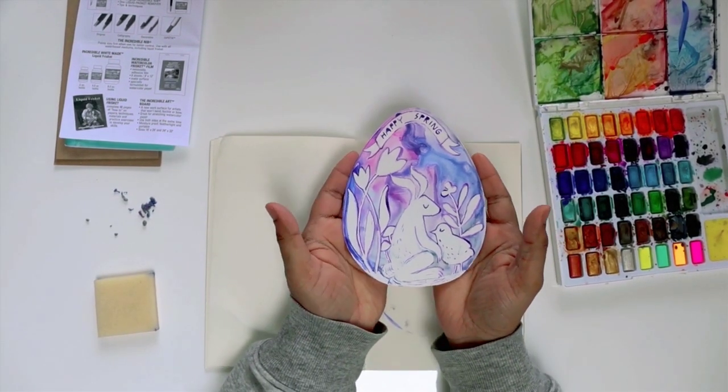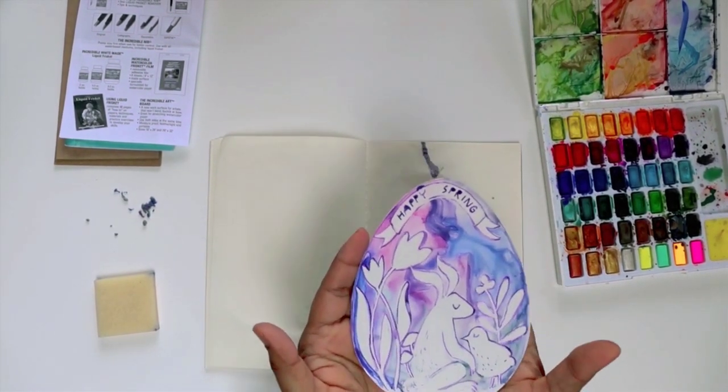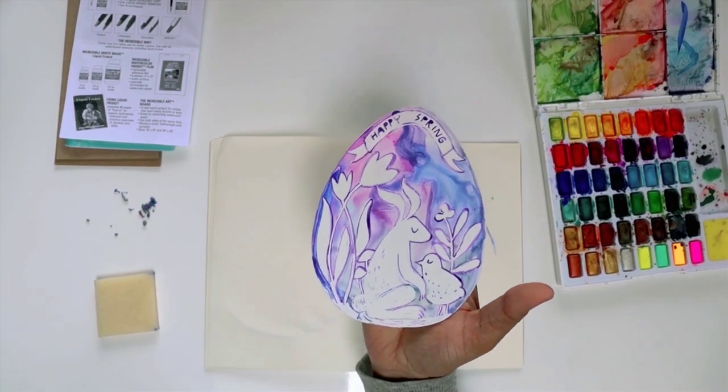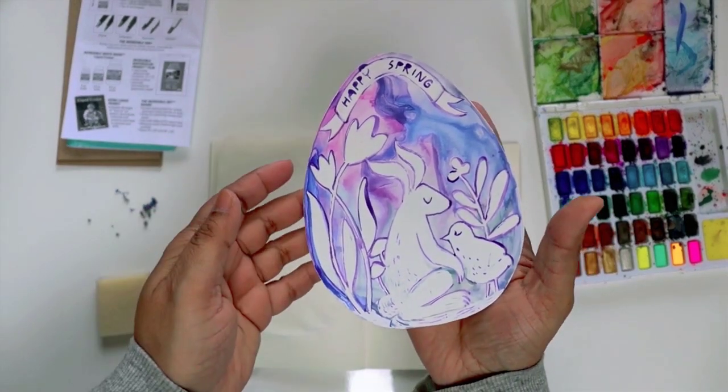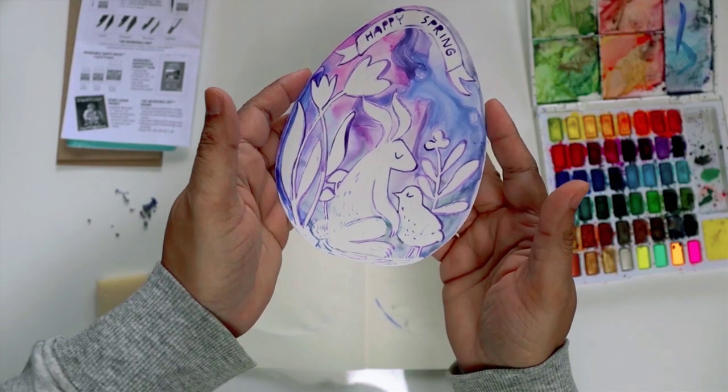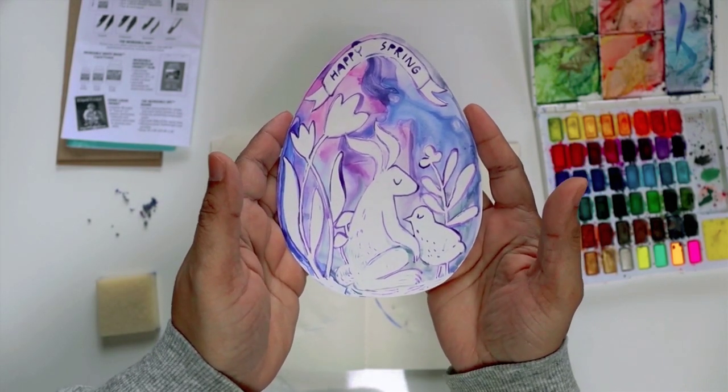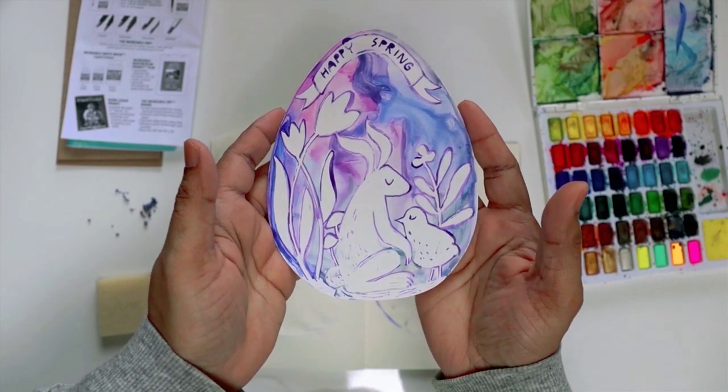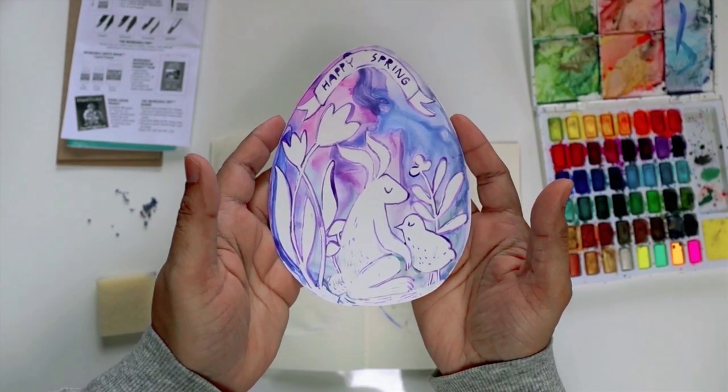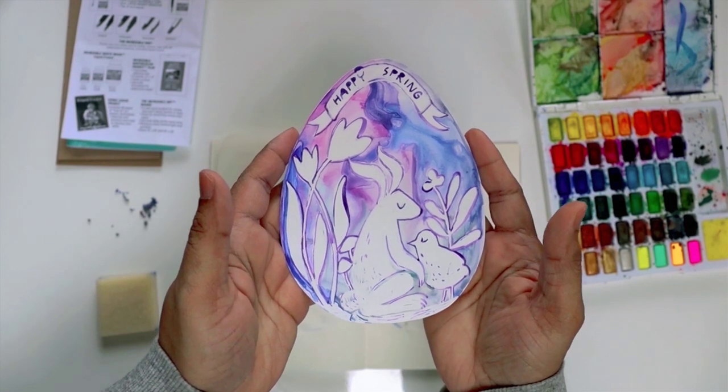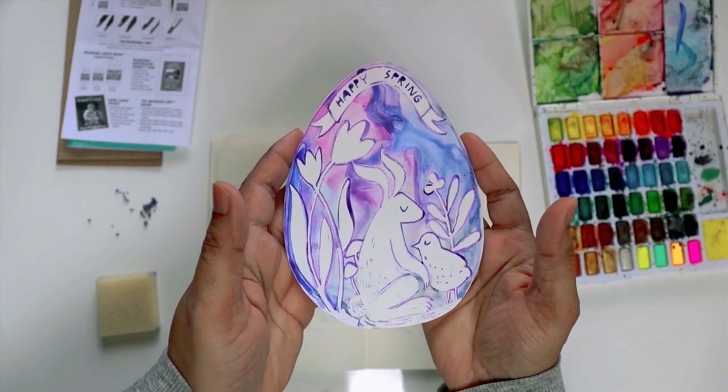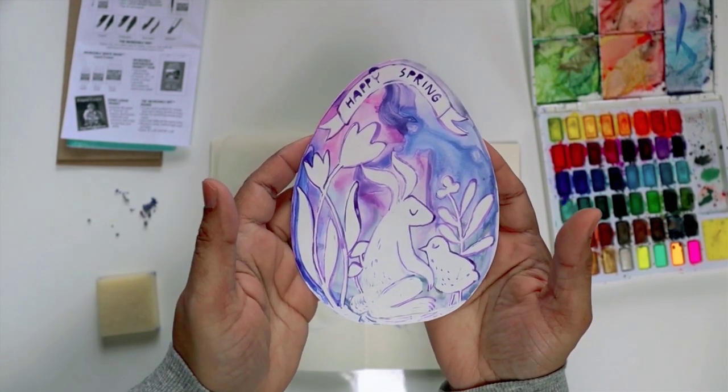This is what my egg looks like. Let me bring it up closer so you can see all the marbling effect that happened due to the free flow of the watercolor and just a little bit of outline. Obviously you can take it many places and go way more detailed, but even for just starters this is kind of delightful. I liked it.